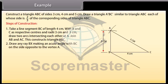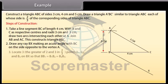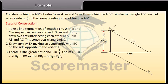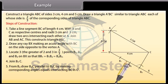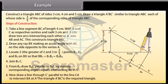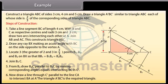Draw any ray BX making an acute angle with BC on the side opposite to the vertex A. Locate 3 points — the greater of 2 and 3 in the ratio 2/3 — B1, B2 and B3 on BX so that BB1 equals B1B2 equals B2B3. Join B3 to C. From B2, draw B2C' parallel to B3C by making corresponding angles equal, intersecting BC at C'. Now draw a line through C' parallel to line CA to intersect BA at A'. Triangle A'BC' is the required triangle.